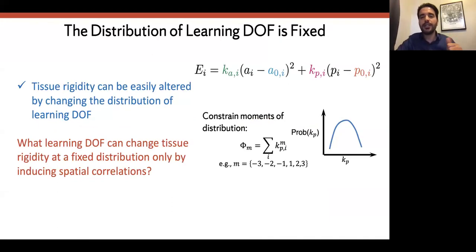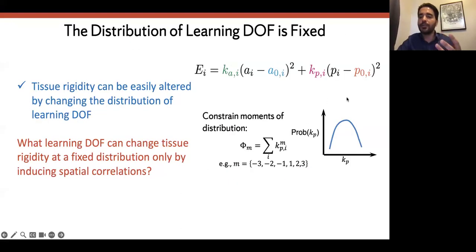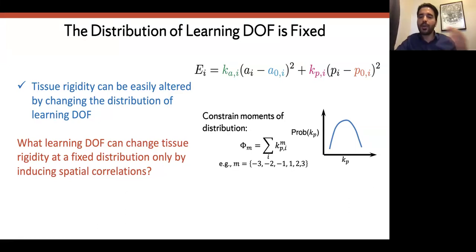Here is my one methods slide. We do constrained energy minimization, constraining the distribution of the added learning degrees of freedom. For example, if I add perimeter stiffnesses as degrees of freedom, I start with a normal distribution, do energy minimization on the elastic energy, and constrain moments of the distribution to keep it fixed during minimization. We look at how the rigidity transition changes for each set of degrees of freedom to check which set is most important.